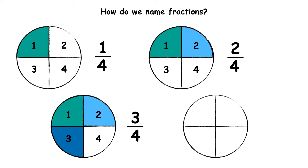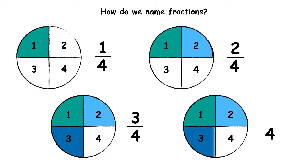And this circle has also been cut into four equal pieces. There are four pieces in total. I am going to colour in four of the four equal pieces. I have coloured in four pieces out of four. When we have four pieces out of a possible four, we have four quarters, which is the same as one whole.